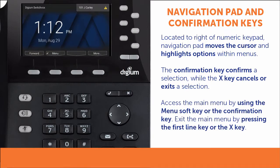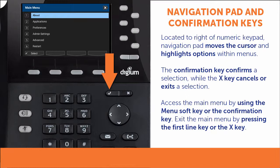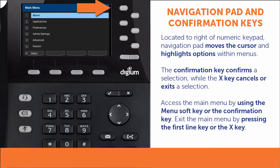When the phone is in its idle state, the main menu can be accessed using the menu soft key or by pressing the confirmation key. To exit the main menu, you can press the first line key, the X button in the top right corner of the main menu screen, or you can press the X key.